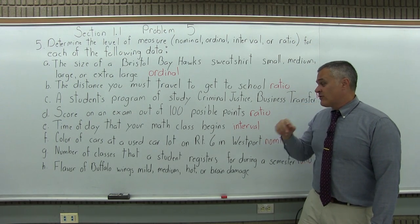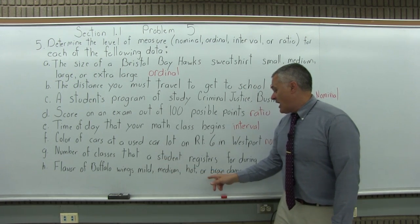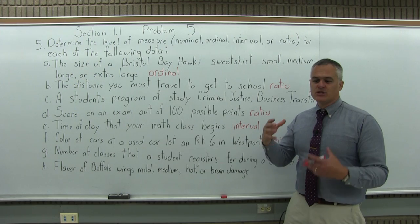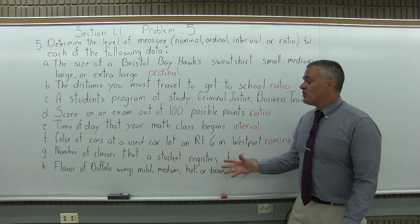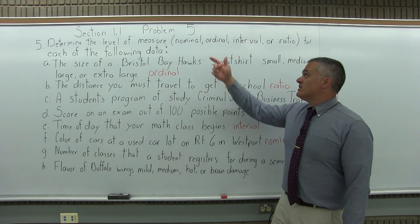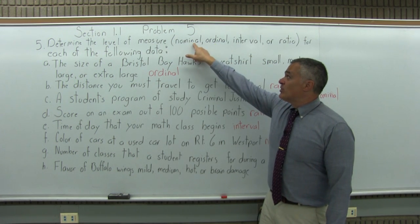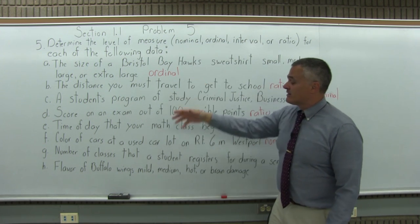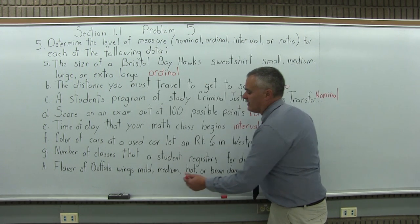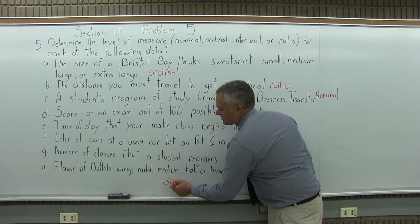And finally, H, the flavor of buffalo wings, whether it be mild, medium, hot, or I have labeled brain damage as usually one that's extremely spicy. So these are names only. There's no numbers involved. So it's either nominal or ordinal. But it does imply an order. Nominal is name only with no implied rank. And ordinal is name with an implied rank. There is certainly a rank implied here. So this would be the ordinal level of measure for the last one.